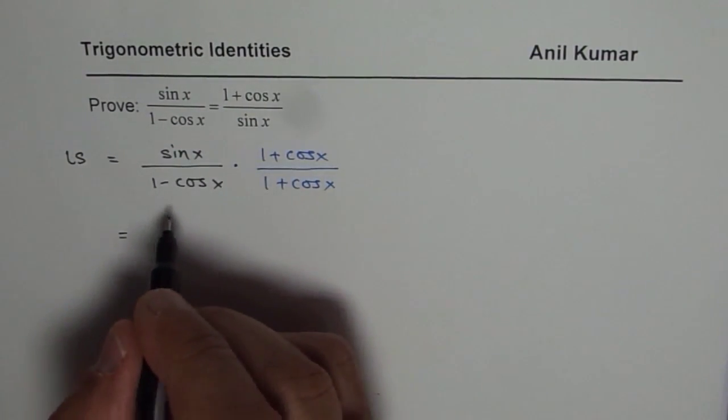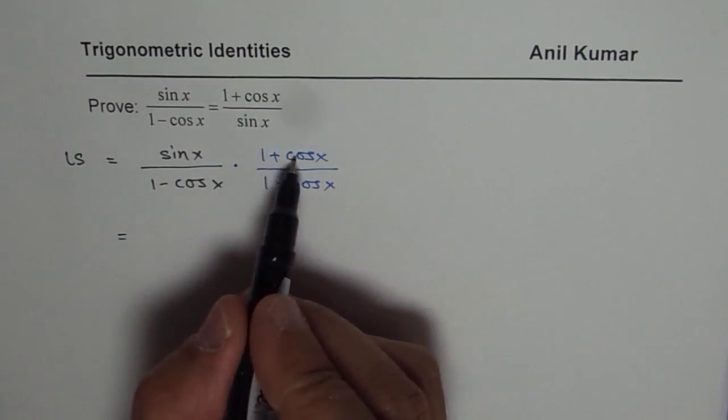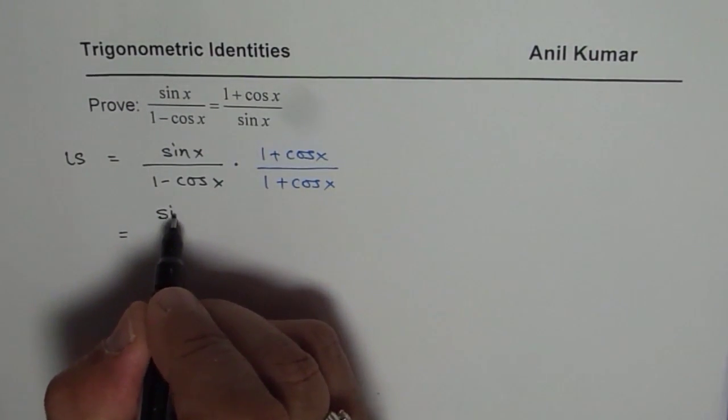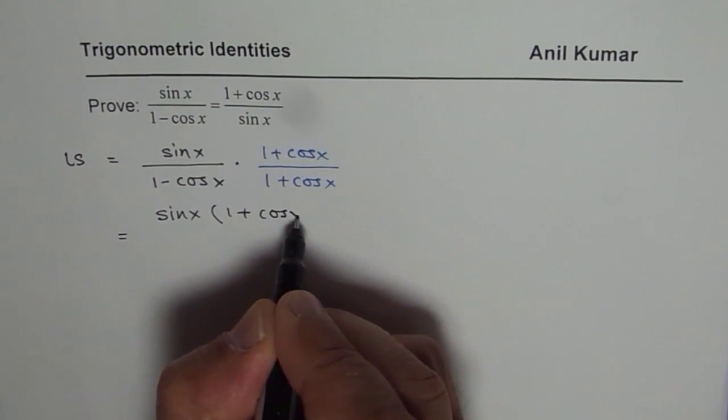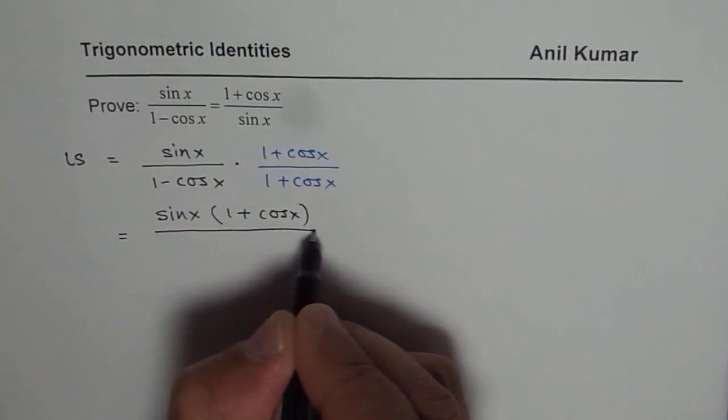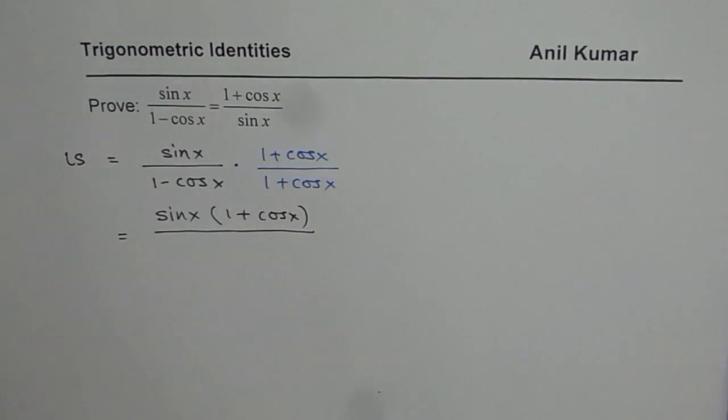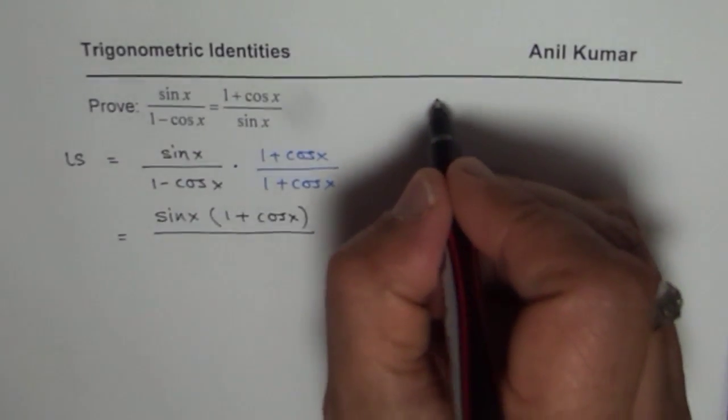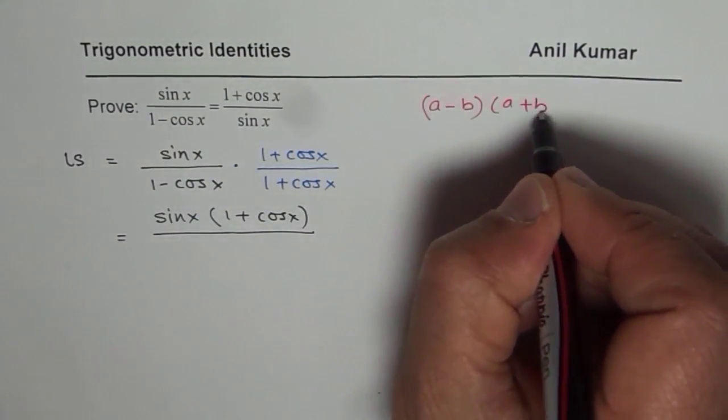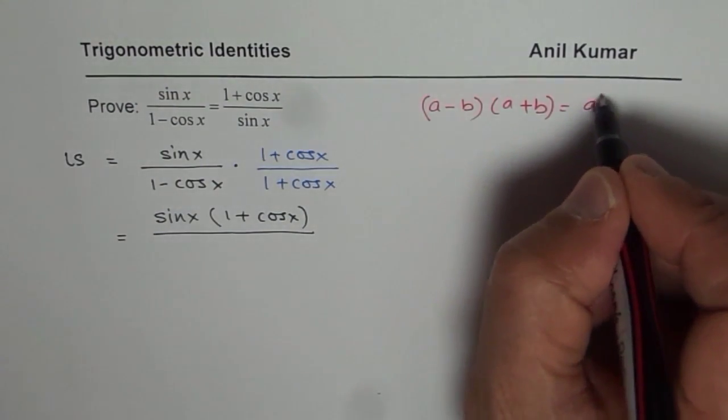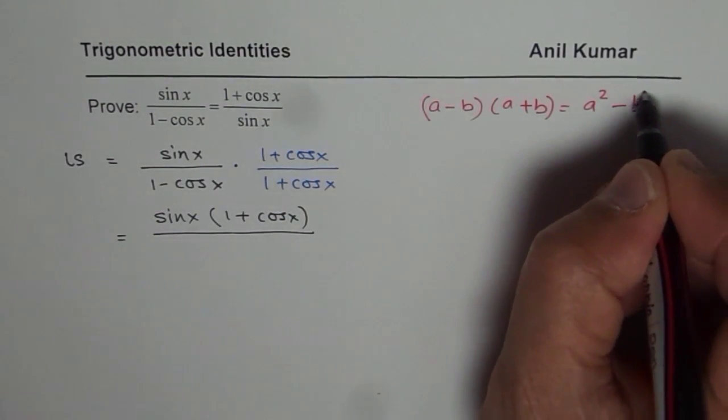So, now let us expand. We will keep the numerator as sin x times 1 plus cos x. Do you see that? And in the denominator, we will multiply. And as you know, what is a minus b times a plus b? Now, this is a very important formula, which will be used so many times in proving identity.